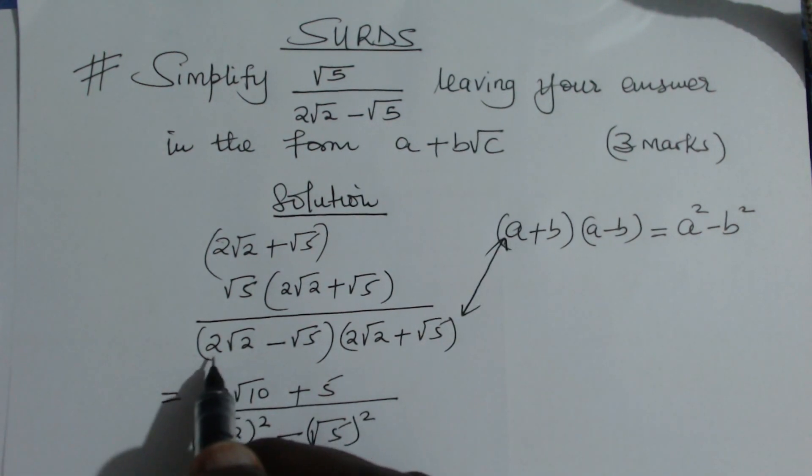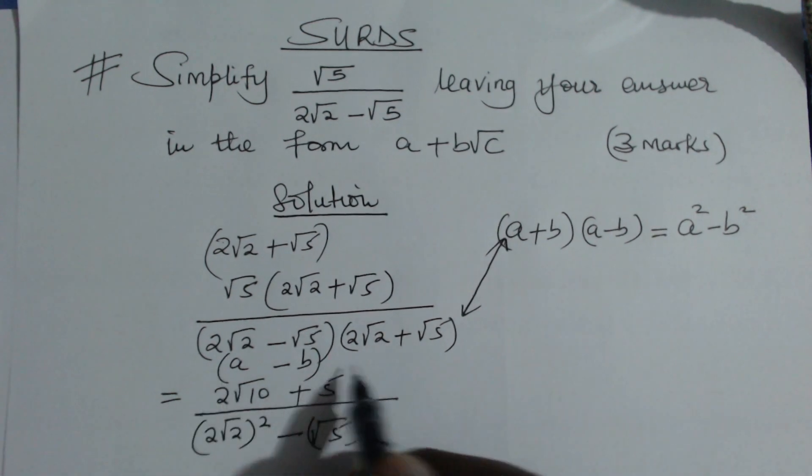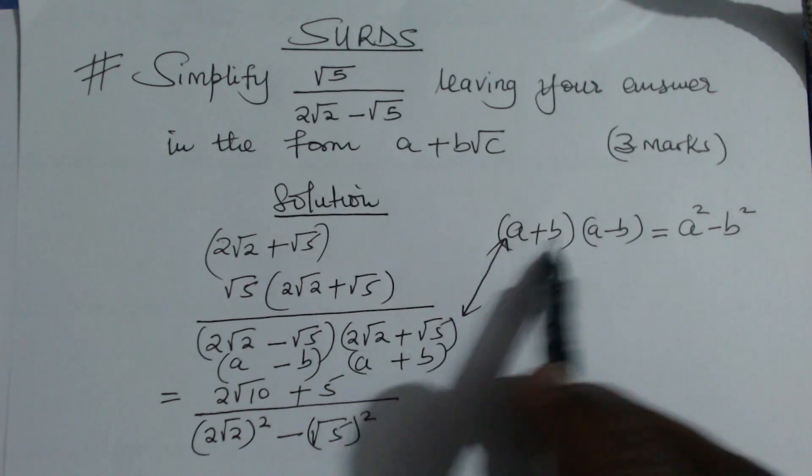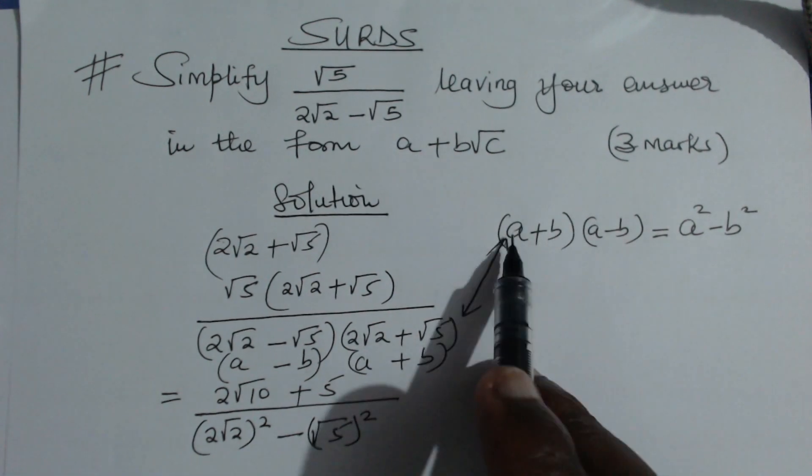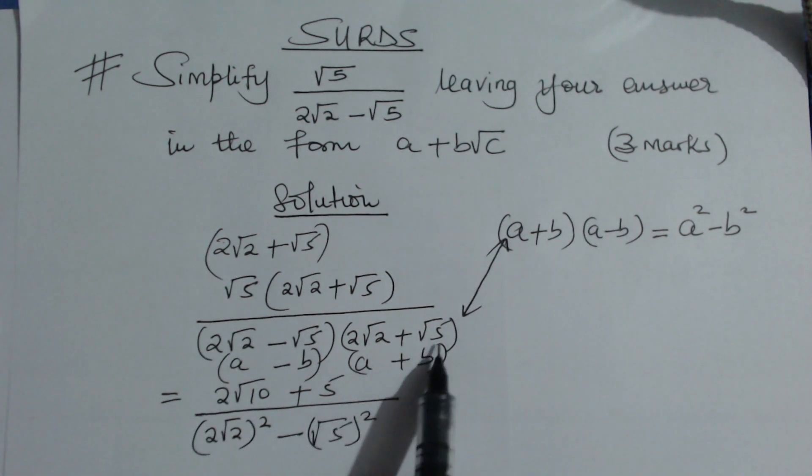By letting 2√2 be a and √5 be b, you'll end up with the same thing. When you expand it, you take a² - and our a here is 2√2 - then subtract b², where b is √5. As simple as that.